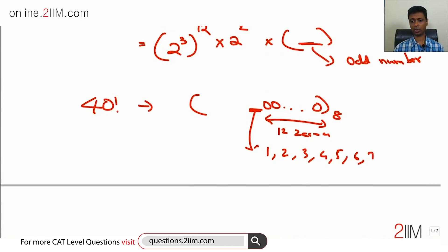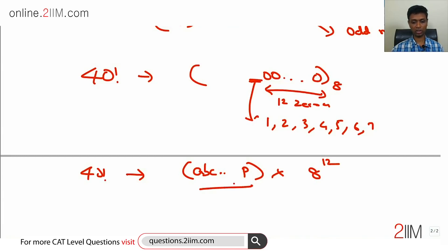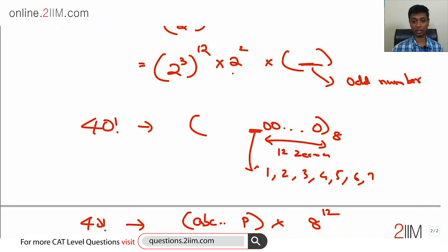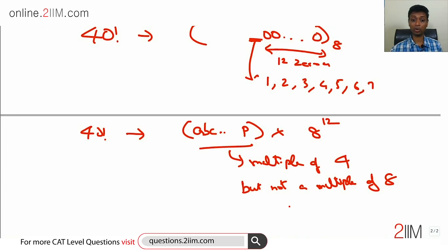We can write 40 factorial as some number P ending with digits ...abcdef, multiplied by 8^12. Now this number P — why is it a multiple of 4? Because after accommodating the 12 eights, we still have a leftover 2² remaining. So P equals 2² times an odd number, making it a multiple of 4 but not a multiple of 8. This is a very important idea.